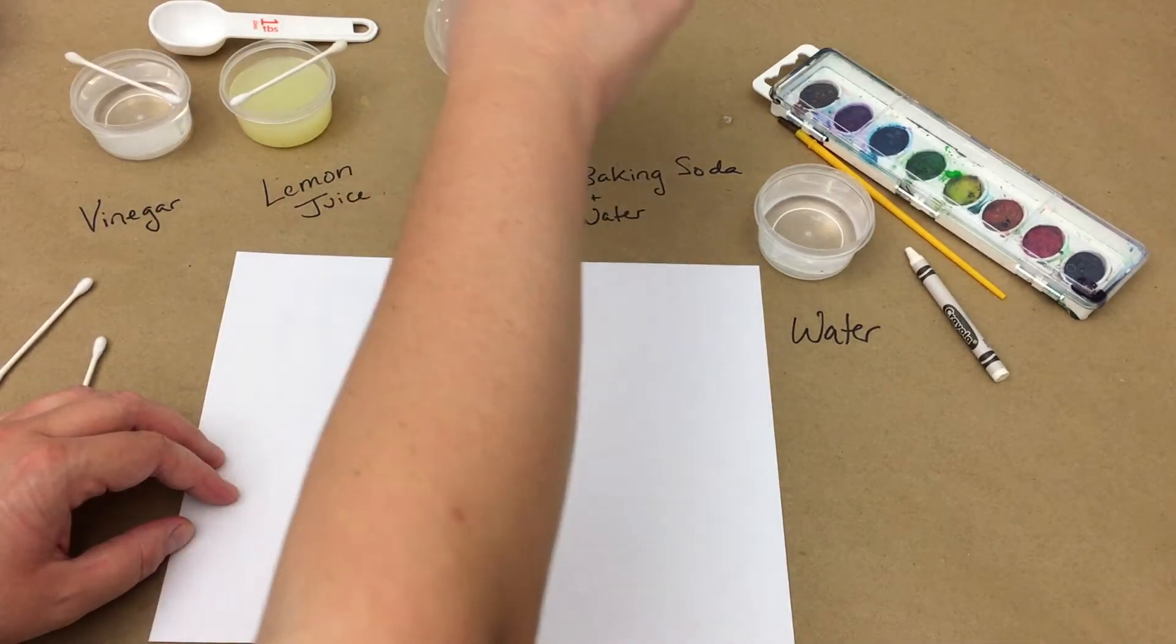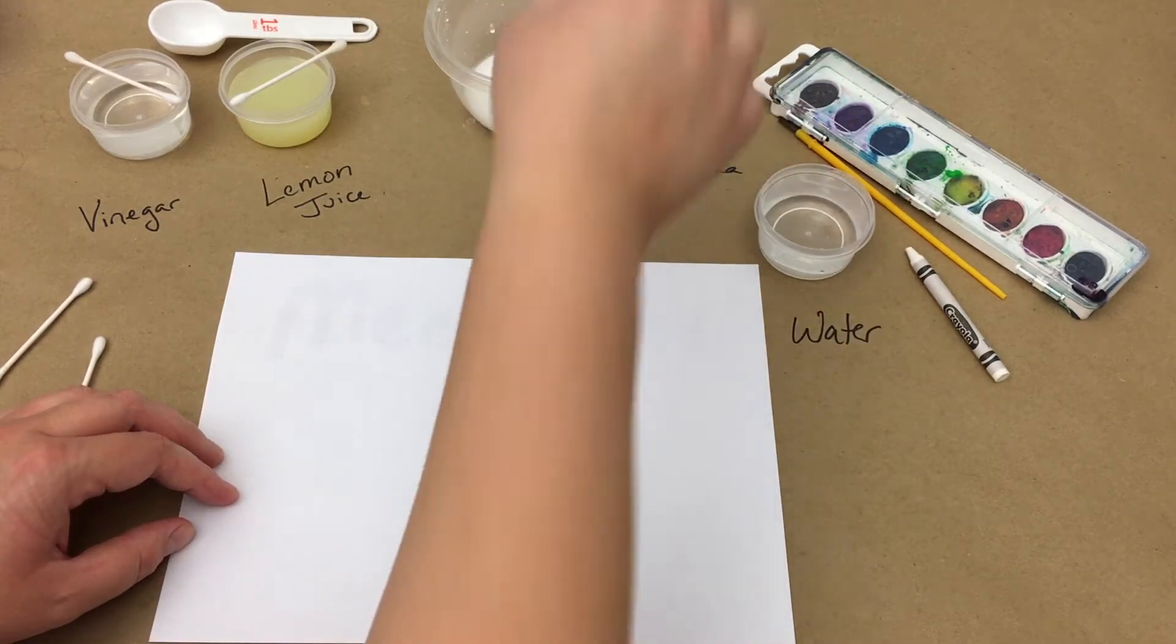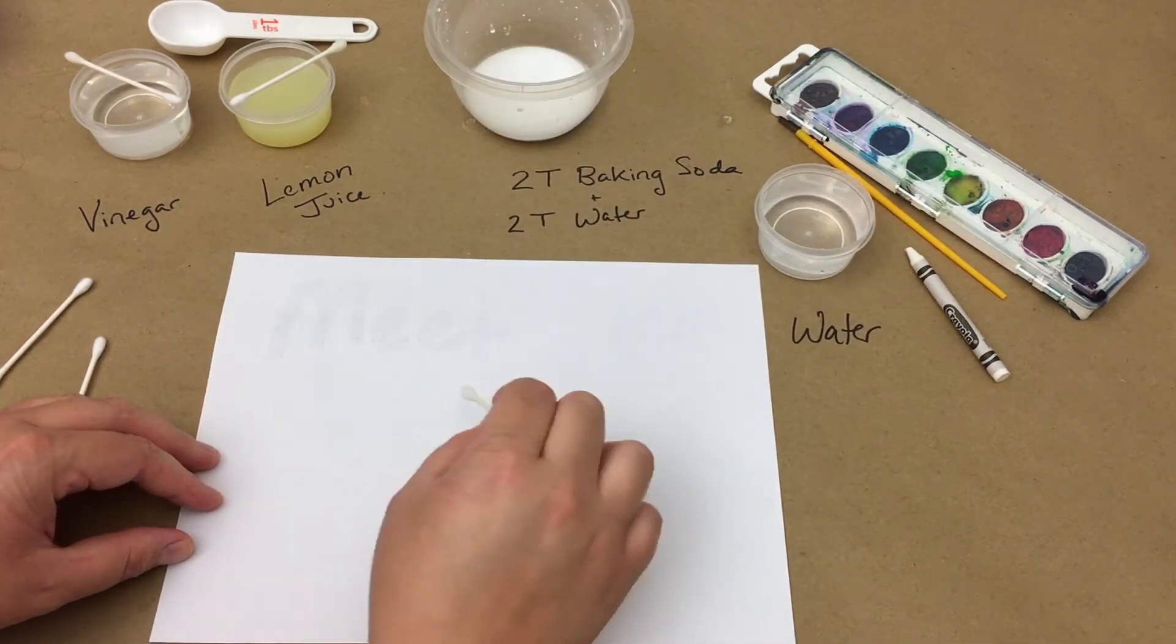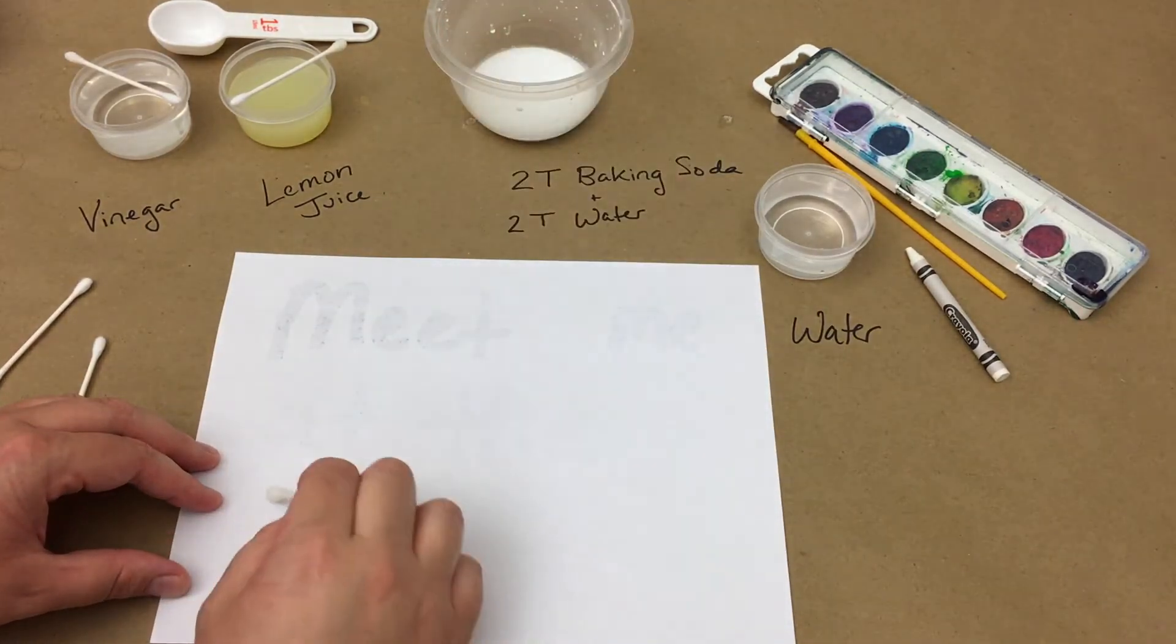Once again, you will be able to see it as you're writing it and just after, because it will be soaking into the paper and the paper will be wet. But once the liquid dries, your message will be effectively invisible until someone is able to reveal it.